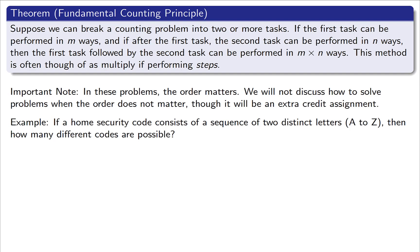Here's what we call the fundamental counting principle. And this kind of generalizes what we were just talking about. If you break a counting problem into two or more tasks, the first task can be performed in M ways, and after the first task, the second one can be performed in N ways, then the two tasks together are M times N ways to do it. And often think about the word steps. If we're doing steps, then we're setting up multiplication. Now the order matters in this. Which one is the first one and which one is the second one matters.